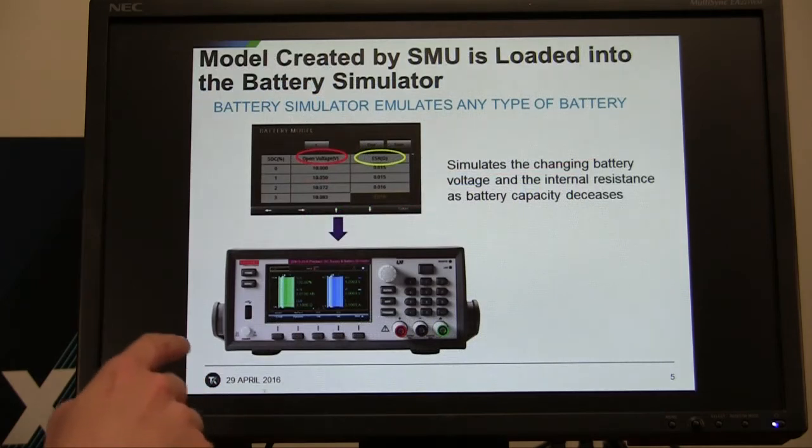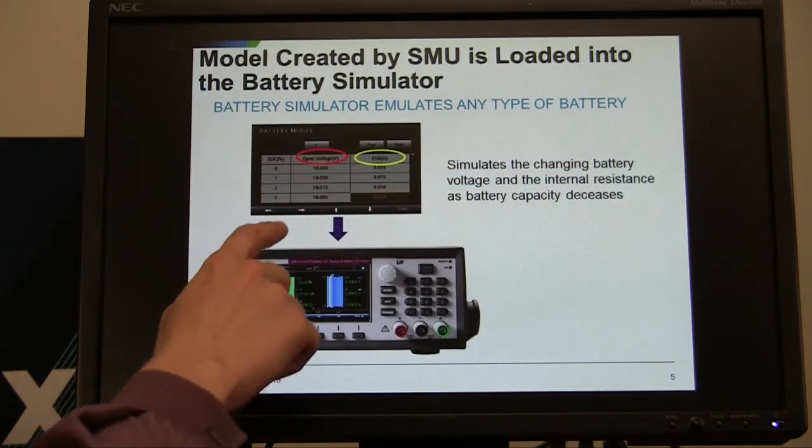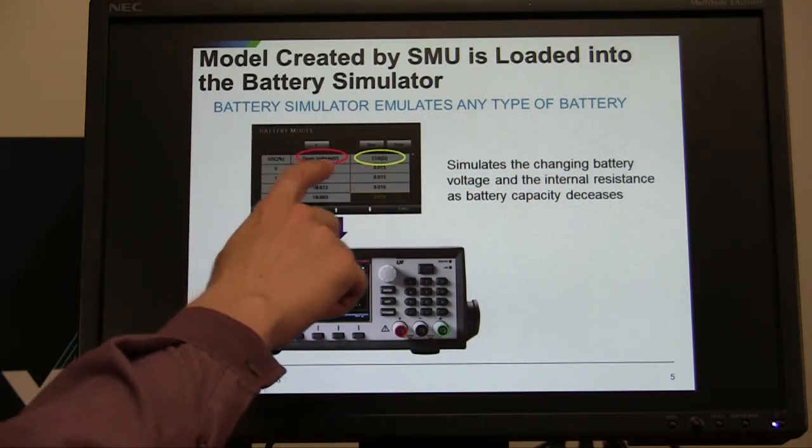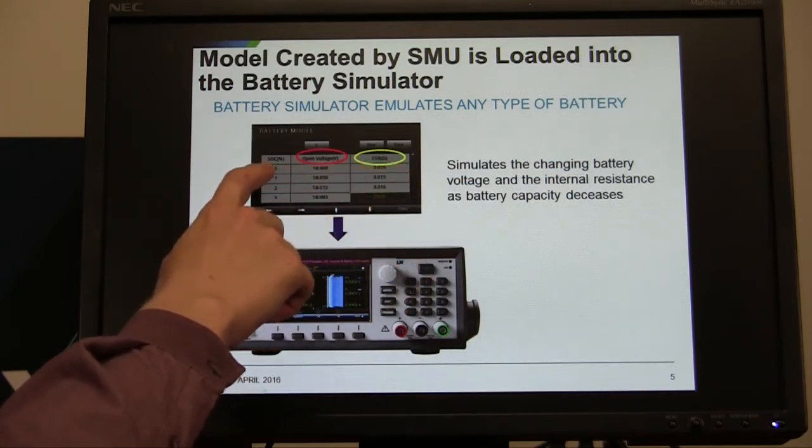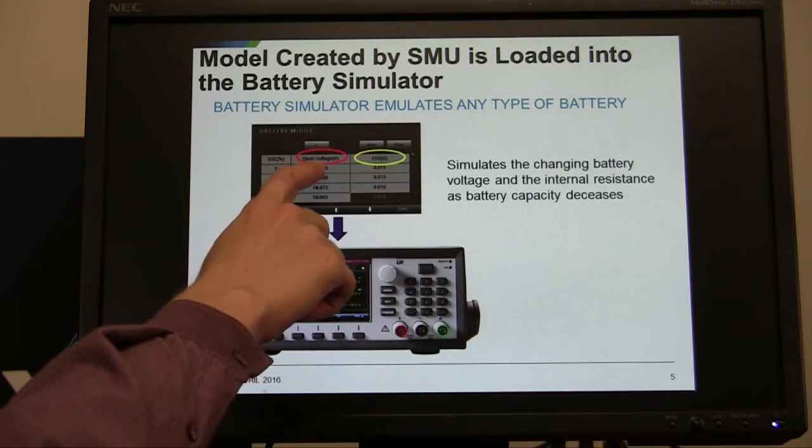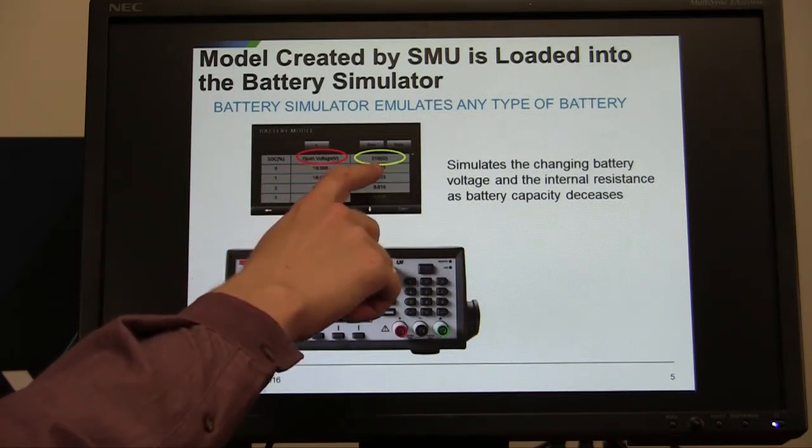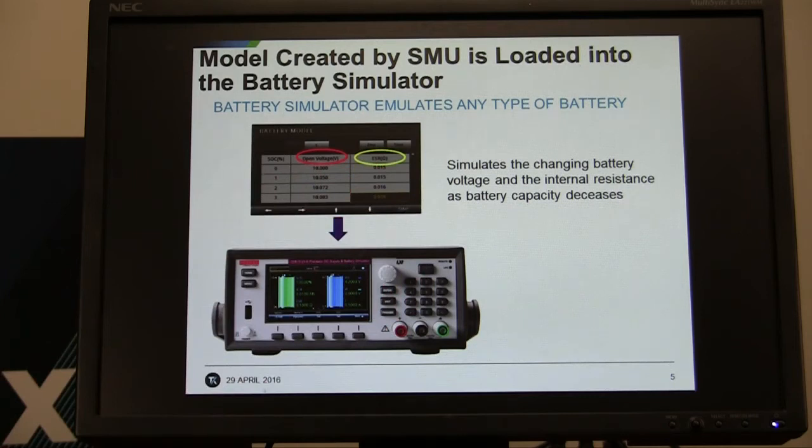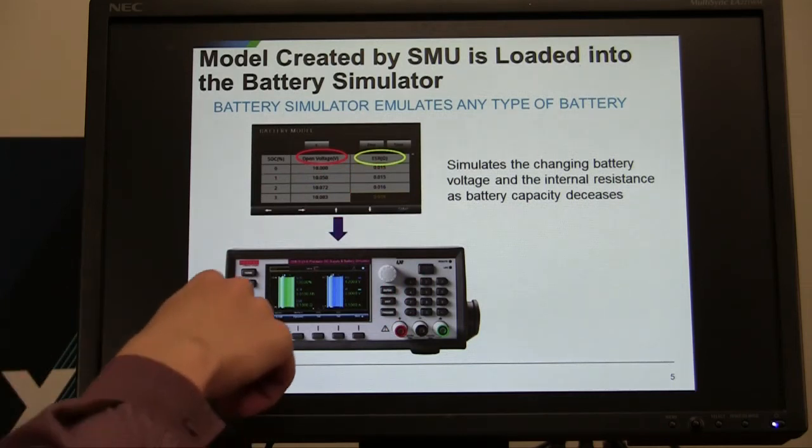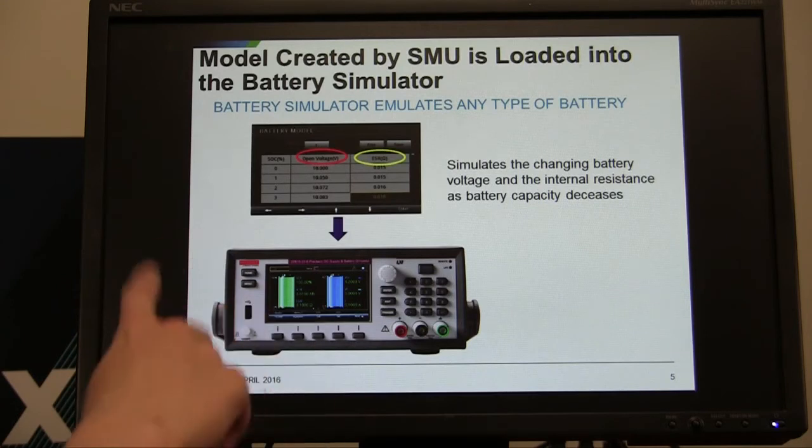So when you load the model back into the 2281S battery, essentially it is an array of data with state of charge, open voltage, and internal resistance points for each percentage state of charge along the way. You're going to insert a USB flash drive in the 2281S battery and import that model.